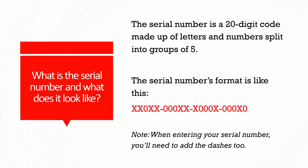So first of all, what is a serial number and what does it look like? The serial number is basically a 20-digit code made up of letters and numbers. You can also call it a serial code. Although some people refer to it as a serial number, it's not always made up of only numbers — it's a combination of letters and numbers. The format looks like what I have here in red.